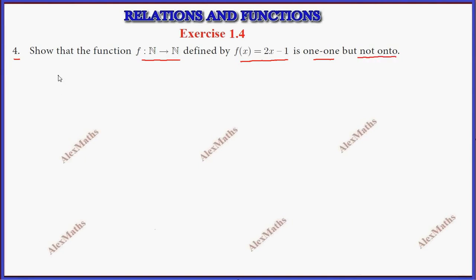To prove one-to-one, assume f(x₁) equals f(x₂). So 2x₁ - 1 equals 2x₂ - 1. Cancel minus 1 from both sides. We get 2x₁ equals 2x₂. Cancel 2, so x₁ equals x₂. Therefore, f(x) is one-to-one.